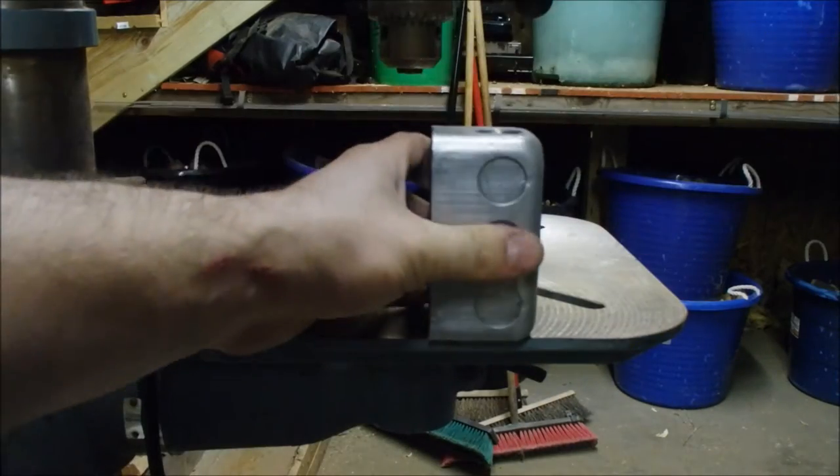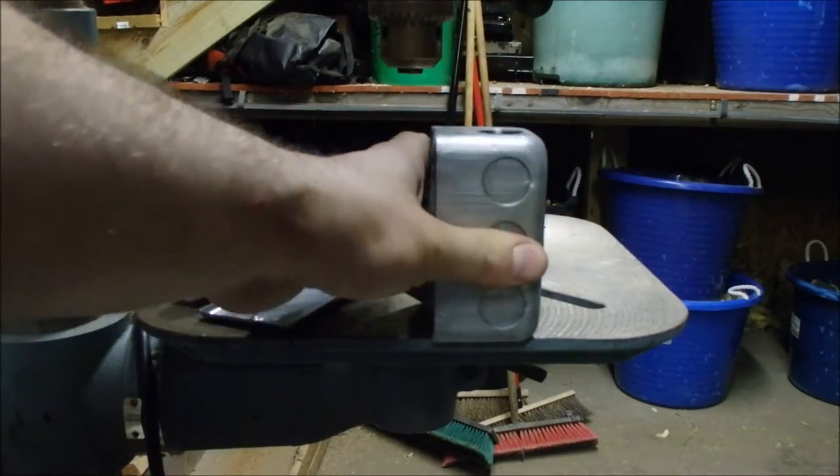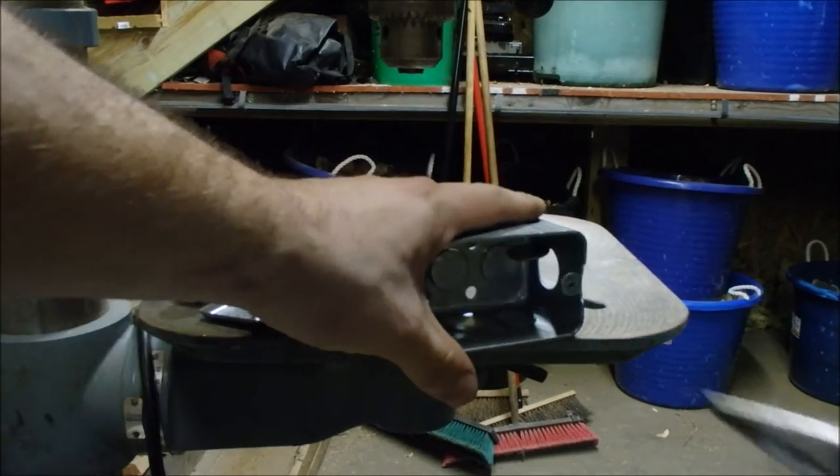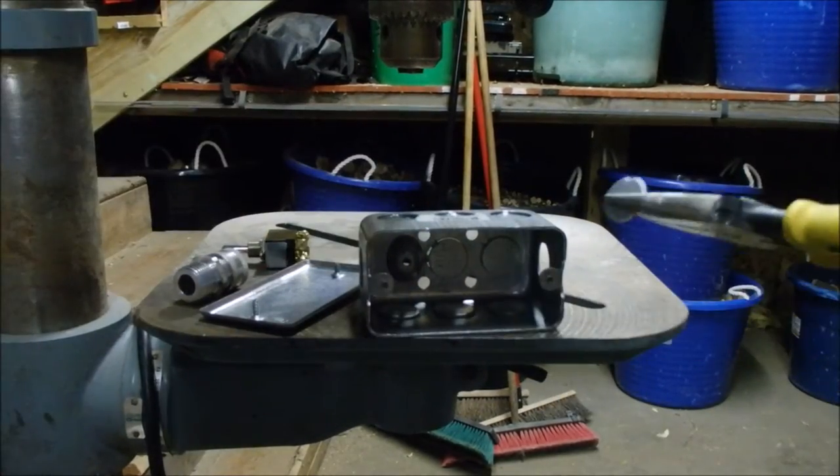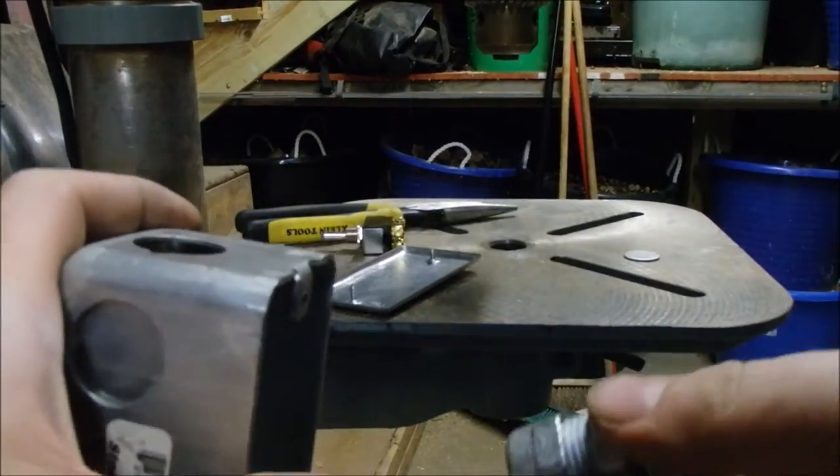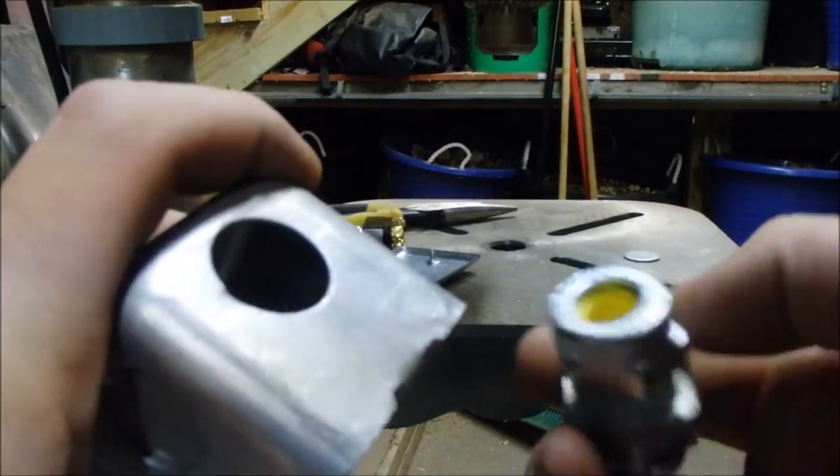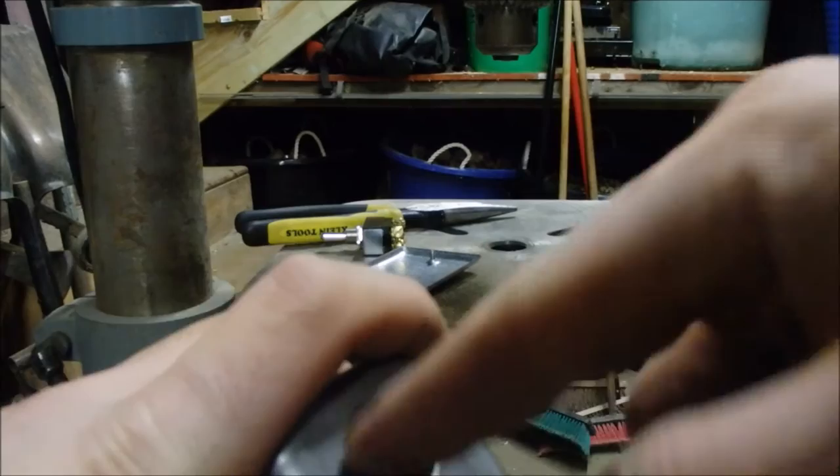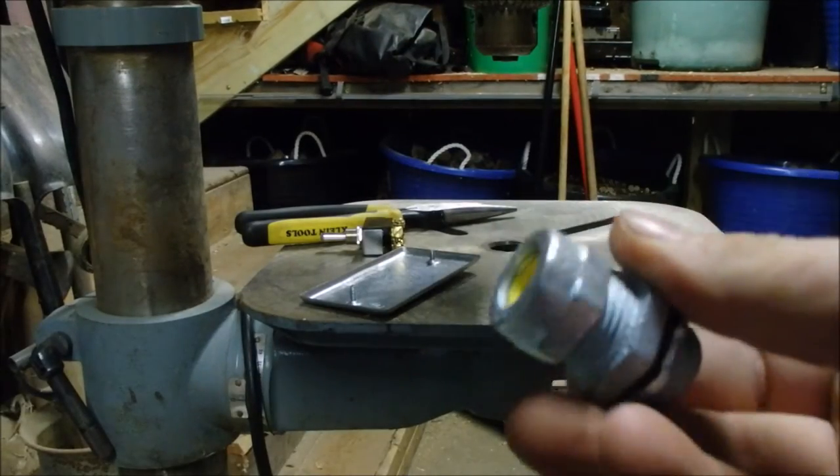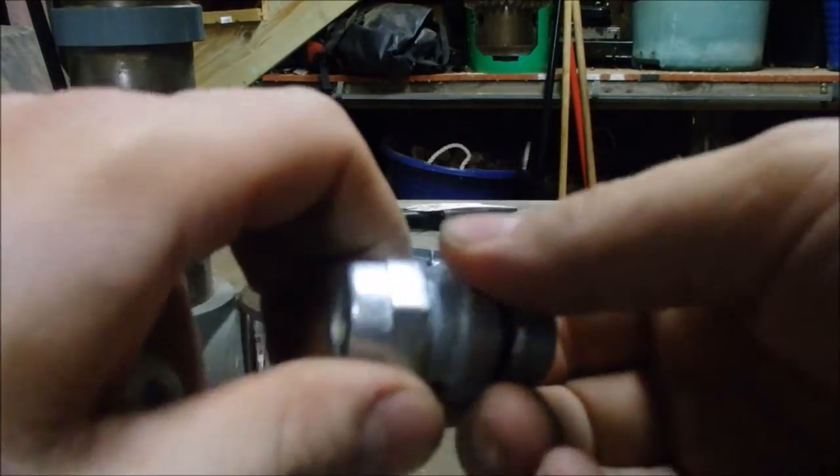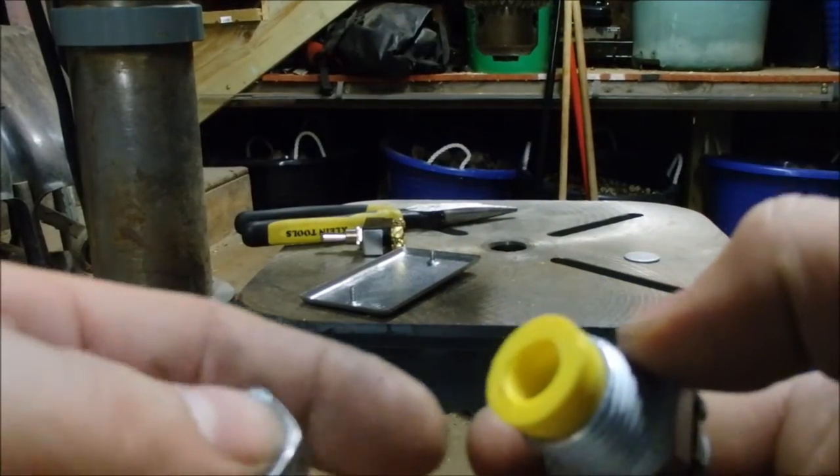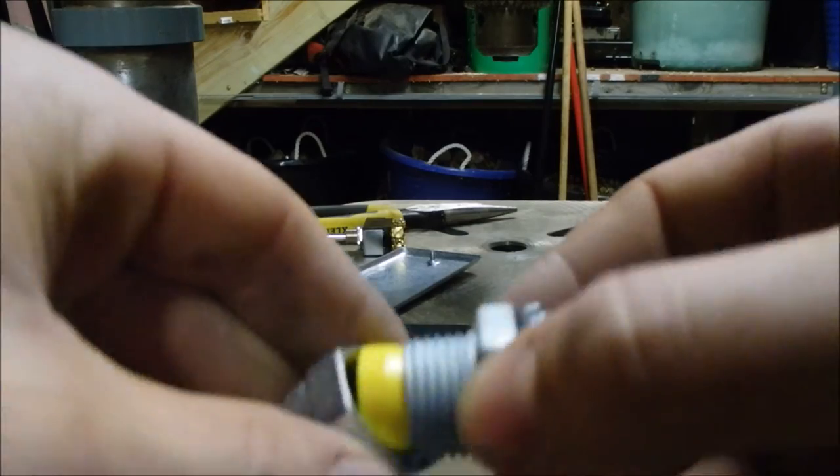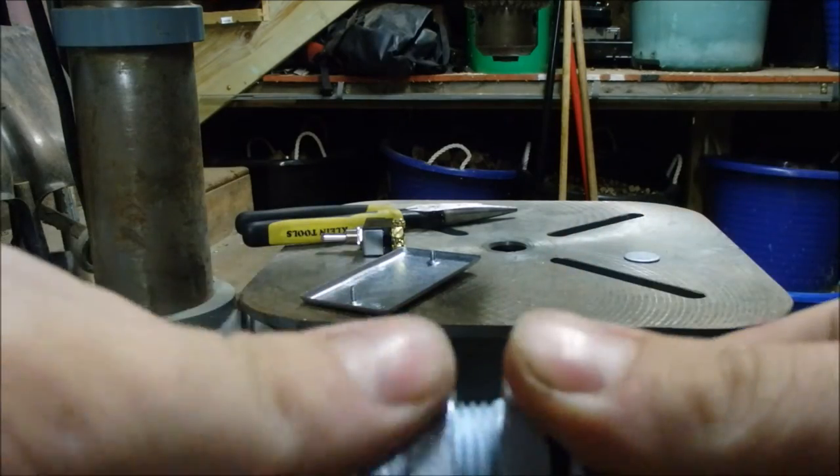Punch the knockout, grab it with the needle nose, twist it back and forth and it comes right out. Next you're going to need some kind of connector to protect your cords from this sharp edge in here. I'm using an actual cord connector, but you can use a Romex connector or whatever will work, a bushing even, to protect your wires and cords from that sharp edge.